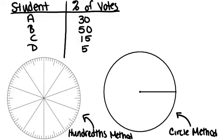Let's start with the hundredths method. Student A got 30% of the votes, so we want to shade in 30% of our circle for student A and label it. Pick a color, and since each of these big wedges is 10%, I can just take three of those. This is 30% of the circle and represents student A.